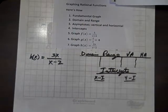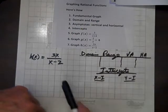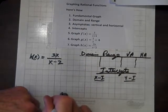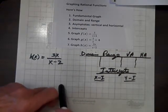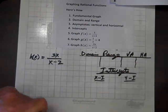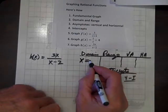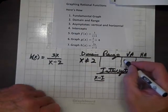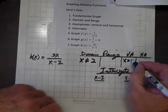Now, our final function is h of x equals 3x over the quantity x minus 2. And the domain is all reals except 2, so x can't equal 2, so the vertical asymptote is x equals 2.